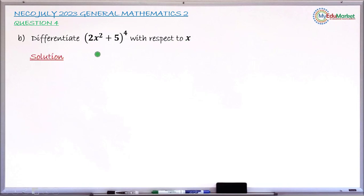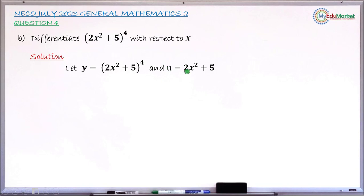The first step in the solution is to let y equal the given function: y = (2x² + 5)⁴. Then introduce a new function u, where u = 2x² + 5 — that is, whatever is inside the bracket. You can now rewrite the original function y in terms of u as y = u⁴, since u represents what is in the bracket raised to the power of 4.